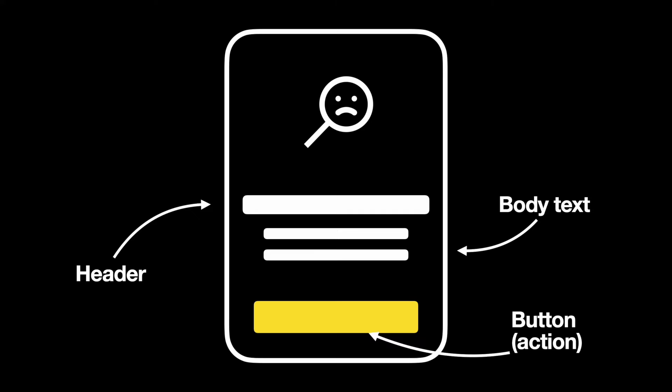Effective empty states allow users to act. When users read the text description and see the action, they understand what they need to do next. While your app should be functional and usable, it should also be pleasurable. Empty states are an excellent opportunity to make a human connection with your users. A well-crafted illustration at the top of the screen can help create a more memorable experience.